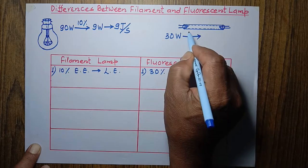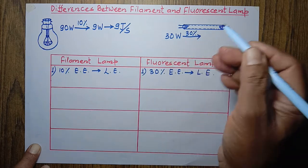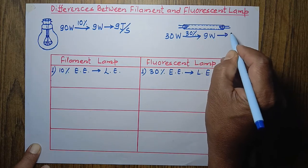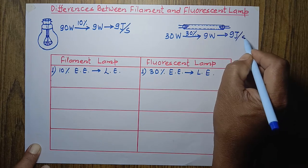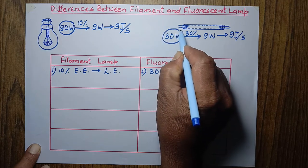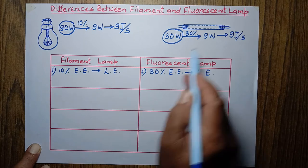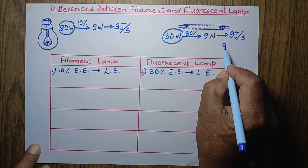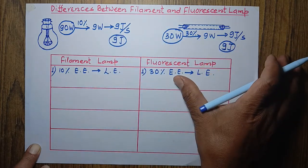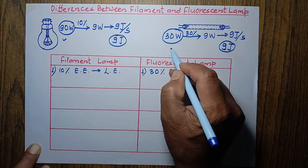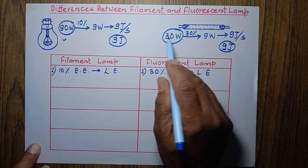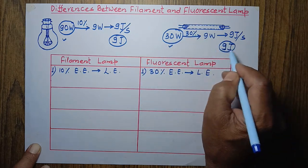The 30-watt fluorescent lamp converts 30% of the total supplied electrical energy into light energy. 30% of 30 watts is also 9 watts — the same. So it also converts 9 joules of electrical energy per second into light energy. Both lamps give us the same 9 joules of light energy per second.